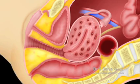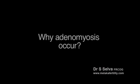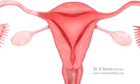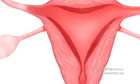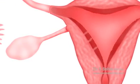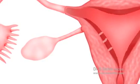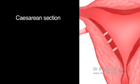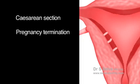Sometimes the whole uterus can be enlarged with adenomyosis. Why does adenomyosis occur? The cause of adenomyosis is unknown. It has been associated with anything that causes uterine trauma that may break the barrier between the endometrium and the myometrium, such as caesarean section, pregnancy termination, and even pregnancy.